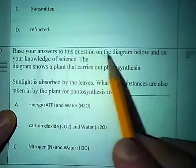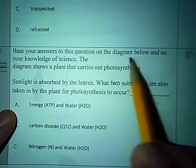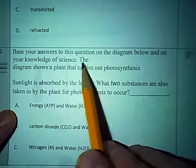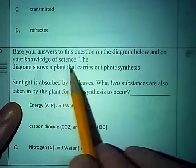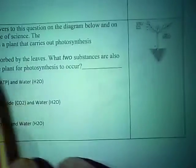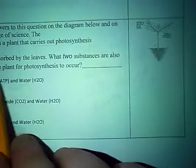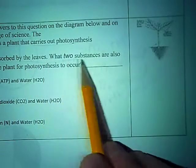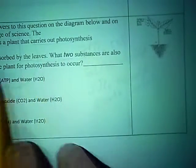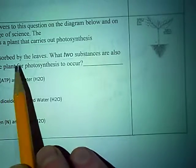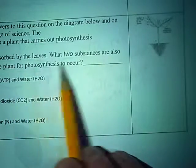Base your answers to the question on the diagram below and on your knowledge of science. The diagram shows a plant that carries out photosynthesis. Here's the diagram. Sunlight is absorbed by the leaves. What two substances are also taken in by the plant for photosynthesis to occur?